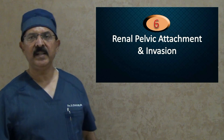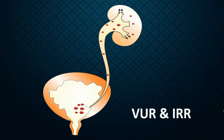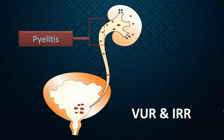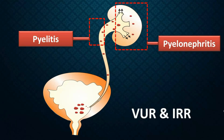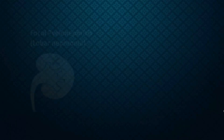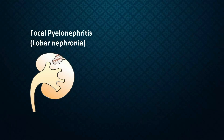Once bacteria reach inside the renal pelvis, they get attached to the wall of the renal pelvis and the calyx. When infection is confined to the wall of the renal pelvis, it's called pyelitis. But more often than not, infection quickly goes into the renal parenchyma and the condition becomes pyelonephritis. When infection moves from inside the renal pelvis into part of the renal parenchyma, it creates a zone of pyelonephritis. The entire kidney is not involved to begin with — it's only one part, often a pole. This is called focal pyelonephritis, similar to one lobe of the lung getting pneumonia — lobar pneumonia. When it happens to the kidney, it is called lobar nephronia.